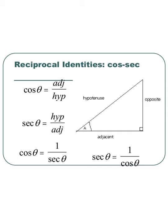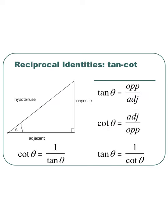The same thing is true for our cosine and our secant — they are reciprocals. The cosine is the adjacent over the hypotenuse, and the secant is the hypotenuse over the adjacent, giving us cosine equals 1 over the secant and secant equals 1 over the cosine. Rounding out our reciprocal identities, we have the tangent and the cotangent. Their ratios are flipped, so the cotangent equals 1 over the tangent of theta, and the tangent equals 1 over the cotangent of theta.